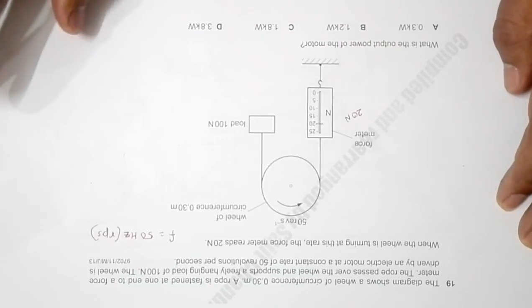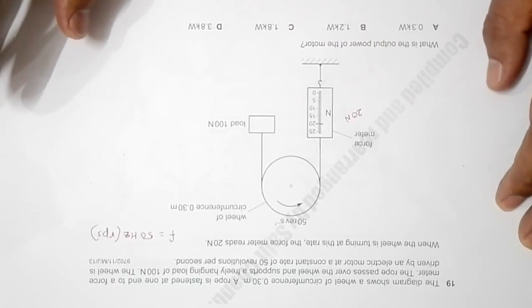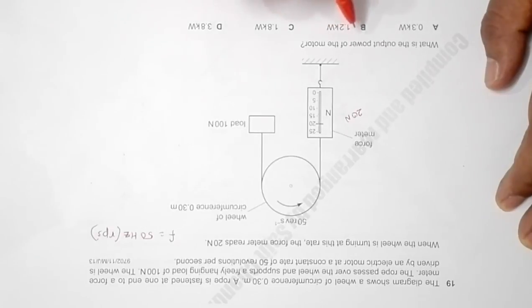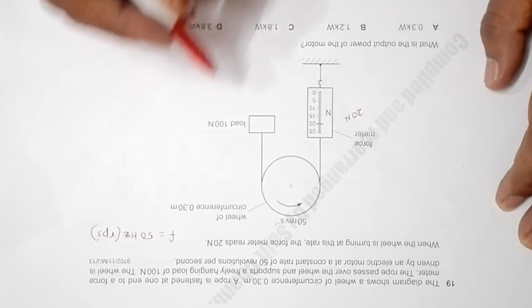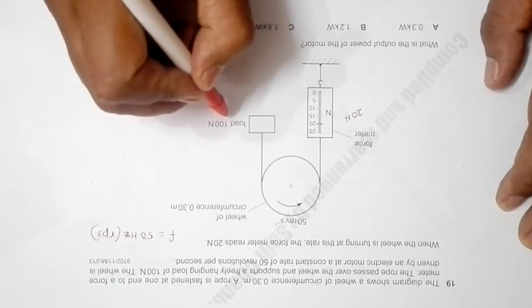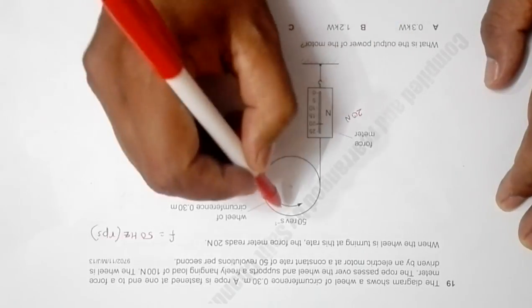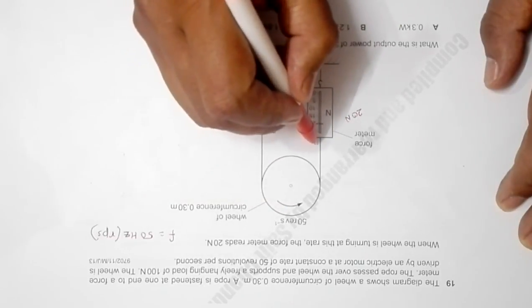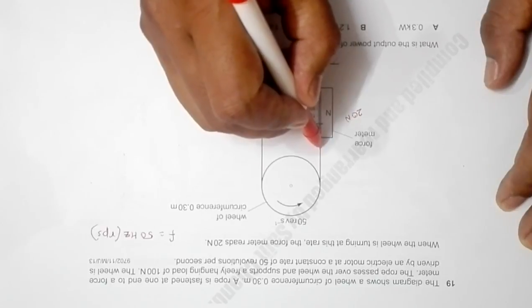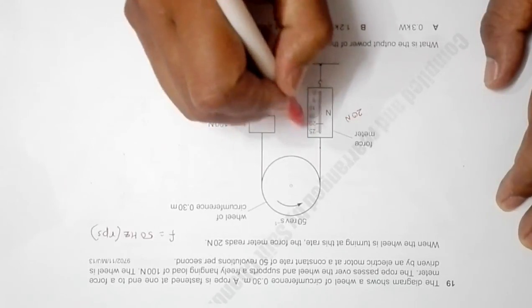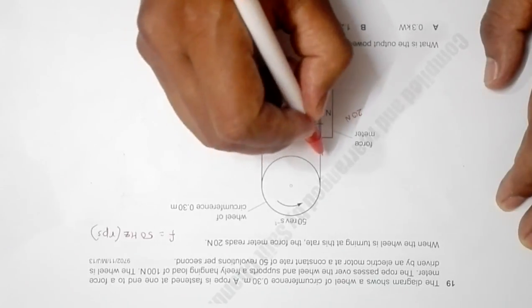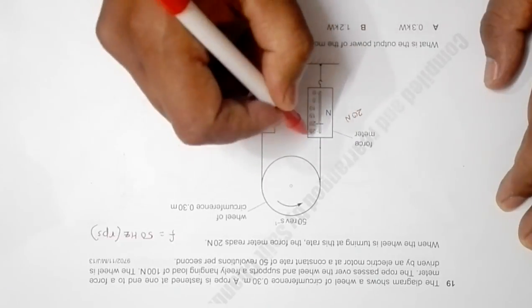We need to find the output power of the motor. Let's realize that in order to lift this load, work is being done by this motor as well as this string with the help of this whole arrangement.